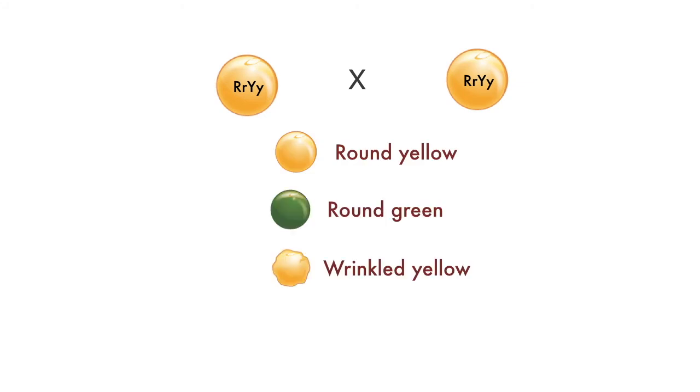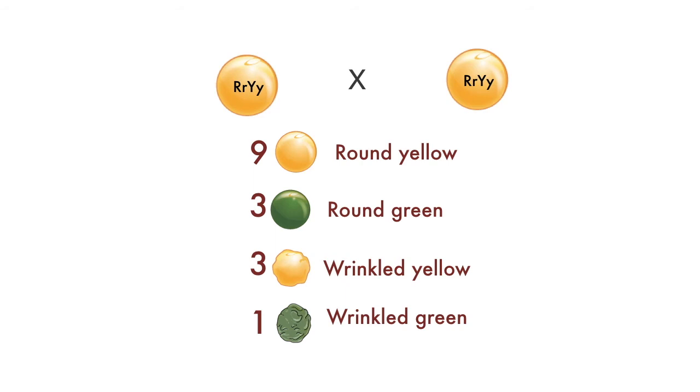When we then cross the offspring from the first cross — the ones heterozygous for both traits — with each other, we call it a dihybrid cross, and that's exactly what Mendel did. When he looked at the offspring of a dihybrid cross, he found four different categories of pea seeds: round yellow, round green, wrinkled yellow, and wrinkled green. These combinations of traits appeared in a ratio of approximately 9 to 3 to 3 to 1, and this 9:3:3:1 ratio was the key clue that led Mendel to the law of independent assortment.